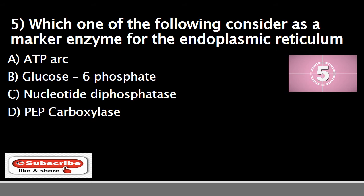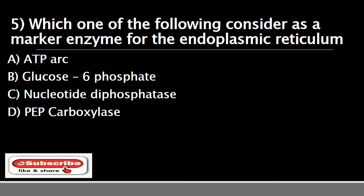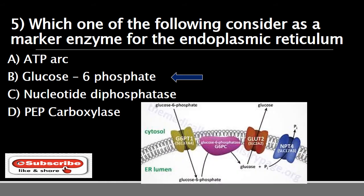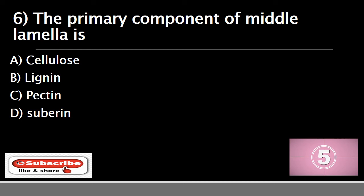Question number five: which one of the following is considered as a marker enzyme for the endoplasmic reticulum? Your options are A) ATPase, B) glucose-6-phosphate, C) nucleotide diphosphatase, or D) PEP carboxylase. The correct answer is B) glucose-6-phosphate. Glucose-6-phosphatase and NADPH cytochrome-c reductase are the two enzymes used as endoplasmic reticulum markers. They are found mainly in the liver and kidney and play a very important role in providing glucose during starvation.